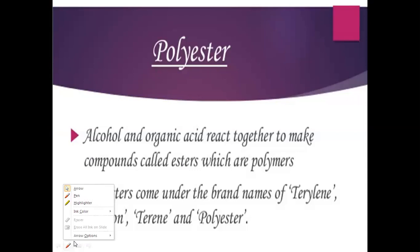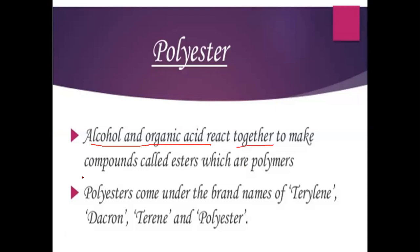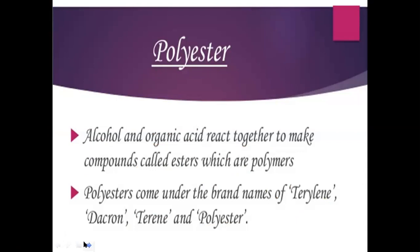Next is polyester. Polyester is made from alcohol and organic acid. When alcohol and organic acid combine, the compound formed is called an ester. Since it is a polymer, the monomers used are alcohol and organic acid. The polymers formed include Terylene, Dacron, Terene, and Polyester.